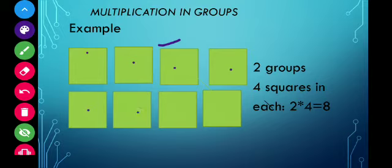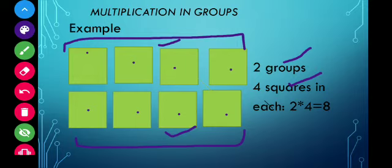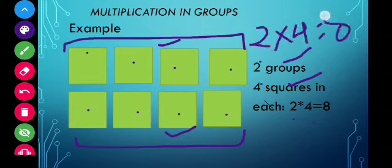So we are counting: one, two, three, four — four squares, and this is one group. Then again: one, two, three, four — four squares, this is another group. The total number of groups we have is two, and each group has four squares. In the multiplication method, you multiply the number of groups by the number of objects in each group.